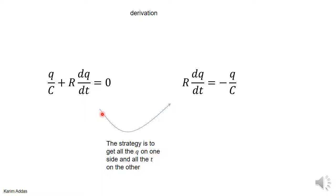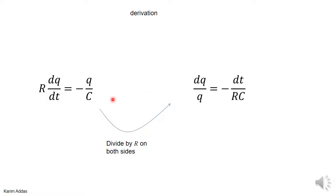The strategy is exactly the same as it was for the charging process, but here it's actually even easier because it's very easy to get the q on one side and the t on the other side. You have r dq/dt equals minus q/c, and if you want to divide by q, the q will go here and the dt will go there.